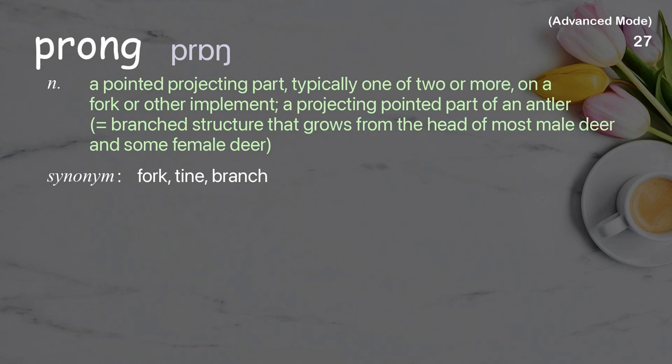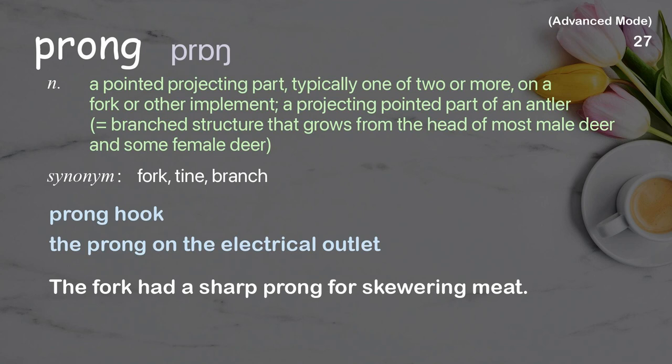Prong: A pointed projecting part, typically one of two or more, on a fork or other implement. A projecting pointed part of an antler — a branched structure that grows from the head of most male deer and some female deer. Examples: Prong hook, The prong on the electrical outlet. The fork had a sharp prong for skewering meat.